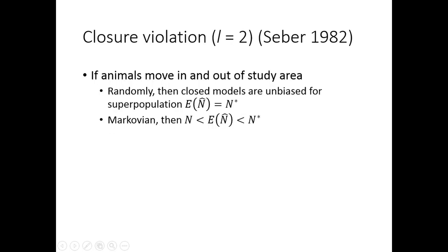For the two-sample situation, if animals move in and out of the study area randomly, then the closed capture estimate of the superpopulation size N* is unbiased. If the movement is Markovian, then the closed capture estimate of the superpopulation size is biased high. What we mean by Markovian is that movement depends on whether the animal was present or absent in the previous time period.